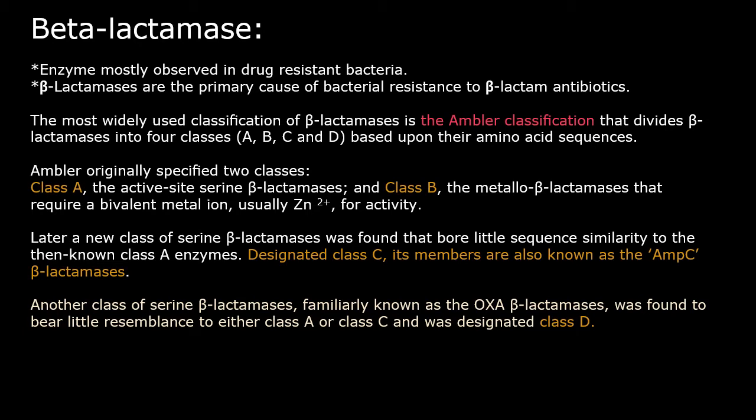So we are going to discuss some types here — the classification. The most widely used classification for beta-lactamases is the Ambler classification, which divides beta-lactamases into four classes: A, B, C, and D, based upon their amino acid sequence.